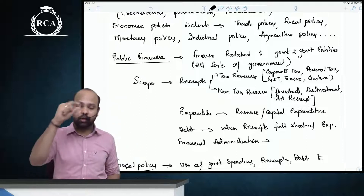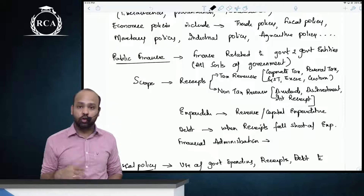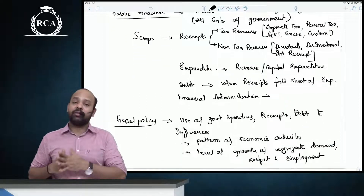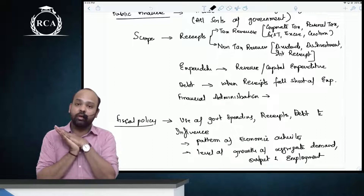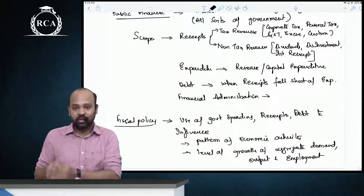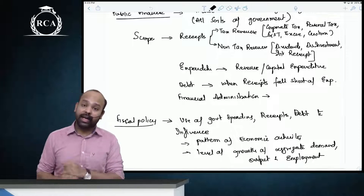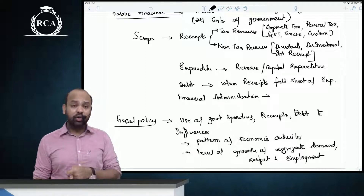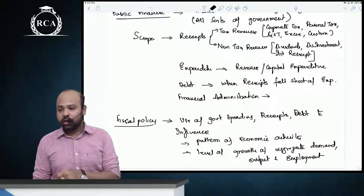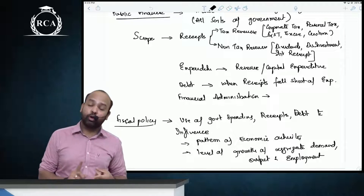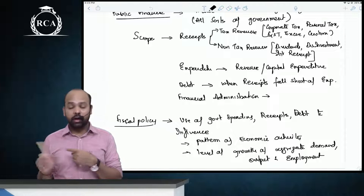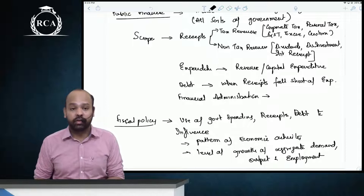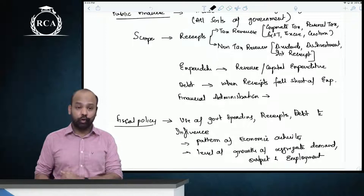The budget covers what are all the receipts and expenditures that the government deals with. Under receipts, the government can have tax revenues in the form of corporate tax, personal tax, excise duty, GST, and customs duty. For non-tax revenues, the government can have revenue receipts in the form of interest, dividends, and profits.